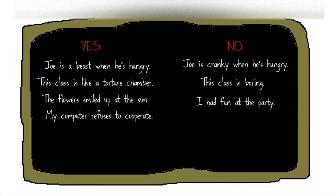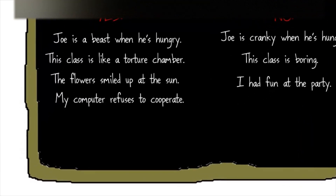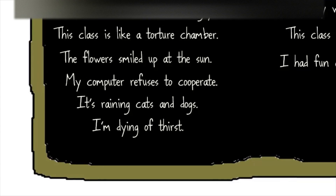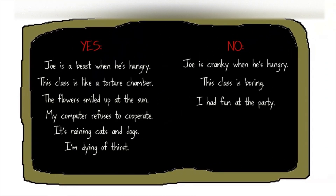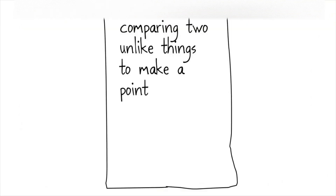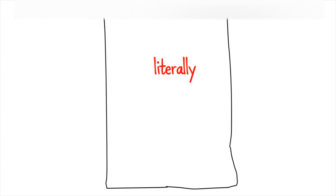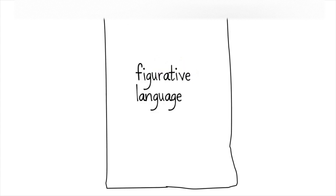Now that students are satisfied with their definition, we test it by giving them more yes examples, hopefully some that might challenge the group's definition further. I would add: 'It's raining cats and dogs.' Here they're comparing raining to the idea of cats and dogs flying out of the sky. Then I give them: 'I'm dying of thirst' — an example of hyperbole, an exaggeration. After seeing two more yes examples, students revise their definition and change it to: 'saying something that isn't literally true but gets a feeling across.' One student used the word 'literally,' which ties directly into the concept — figurative language is the opposite of literal language.